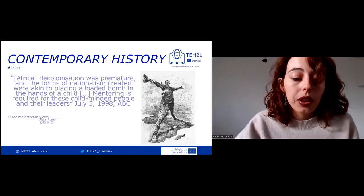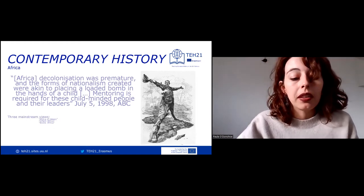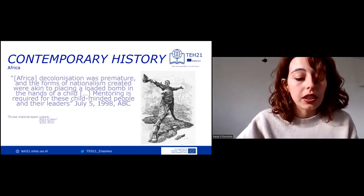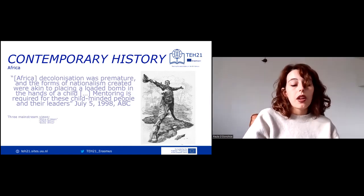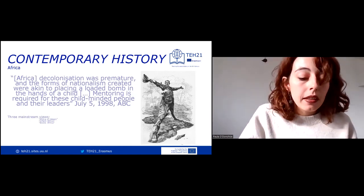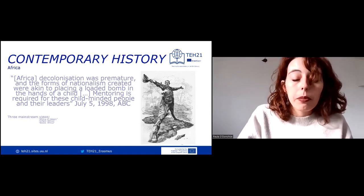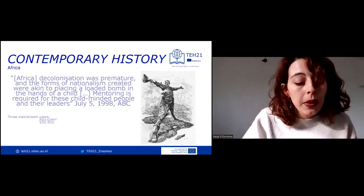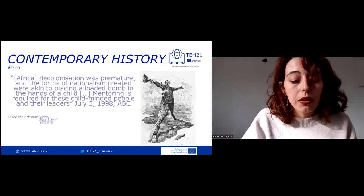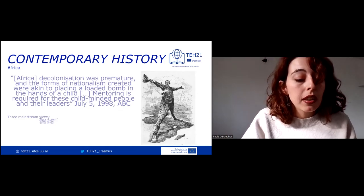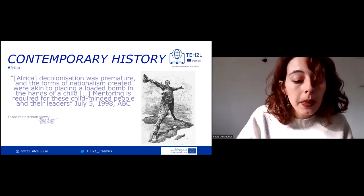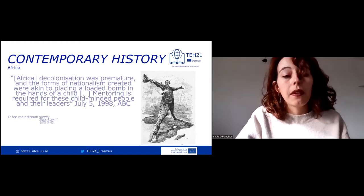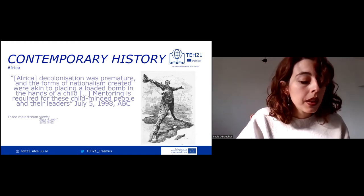However, there were still attempts by European colonizers to maintain control by modifying certain rules in the colonial system. For example, on July 5th, 1958, the Spanish newspaper ABC argued that African decolonization was premature, and that the forms of nationalism created were akin to placing a loaded bomb in the hands of a child — mentoring is required for these child-minded people and their leaders.